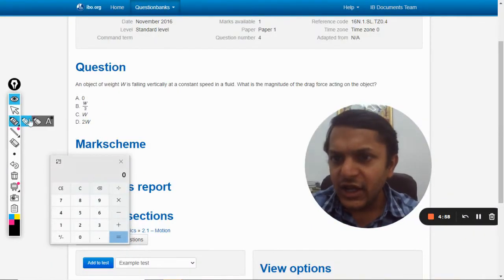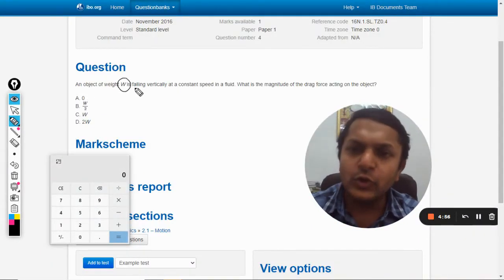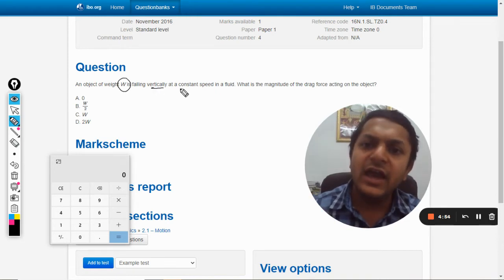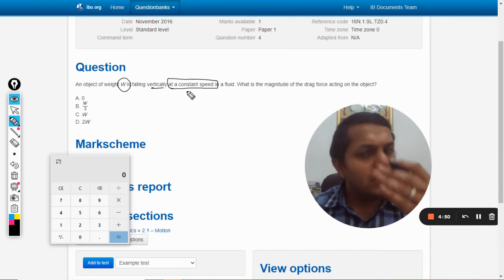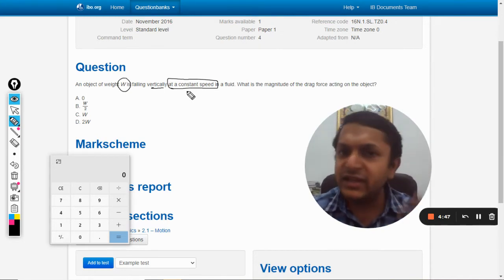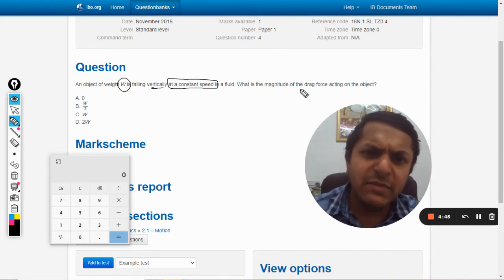Okay, so in this question, an object of weight W is falling vertically at a constant speed. Now, falling on Earth at a constant speed means there is a drag force. What is the magnitude of the drag force? Otherwise, it is not possible.